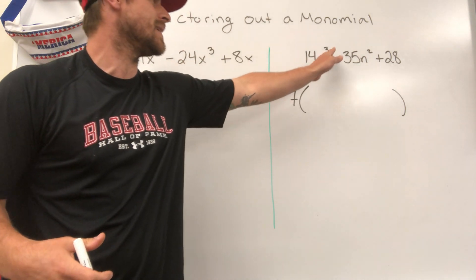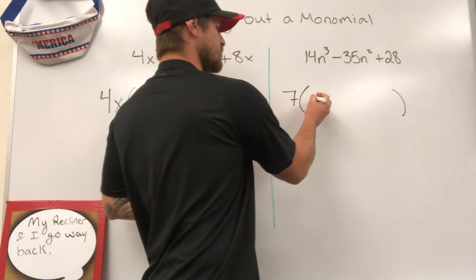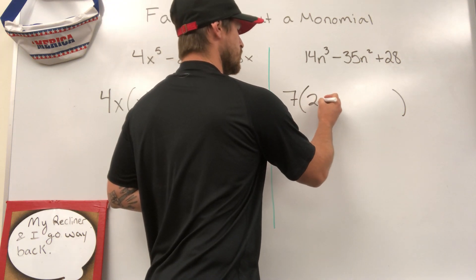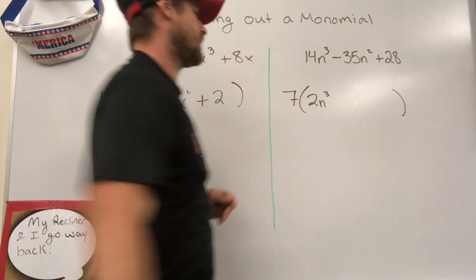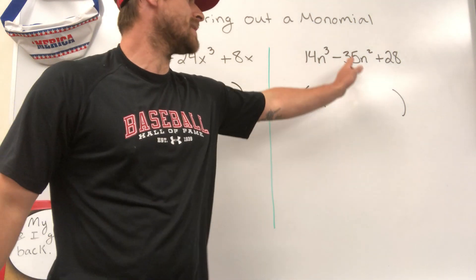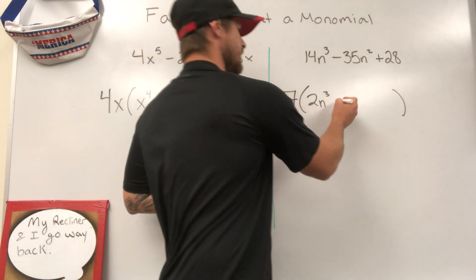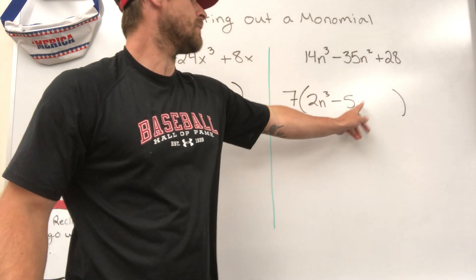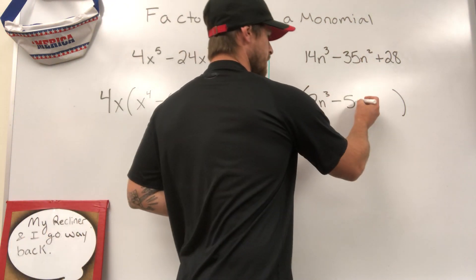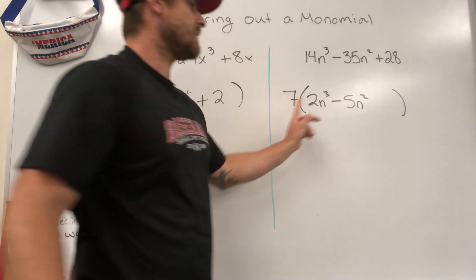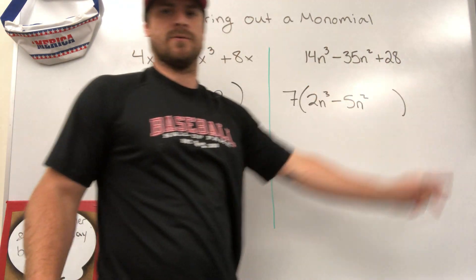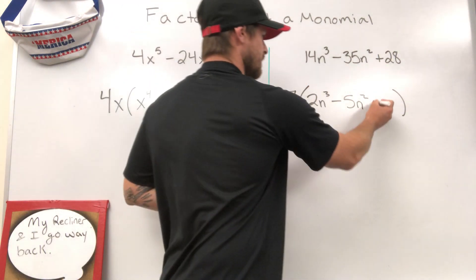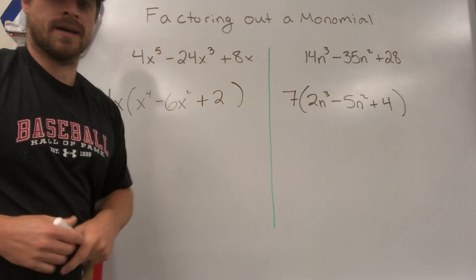So 7 times what makes 14n to the third power? 7 times what makes 14? 2n to the third power. 7 times what makes negative 35? Negative 5. We need to multiply it by an n squared. And then 7 times what would make a positive 28? And we know that's going to be 4.